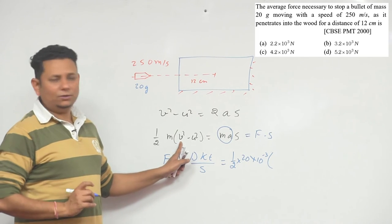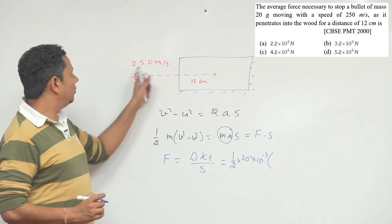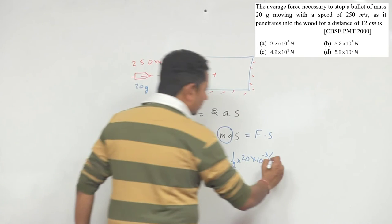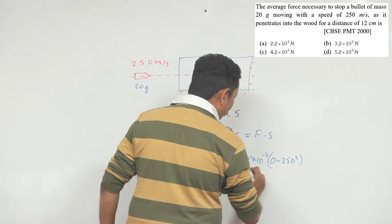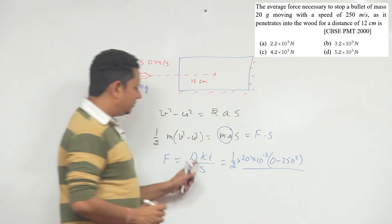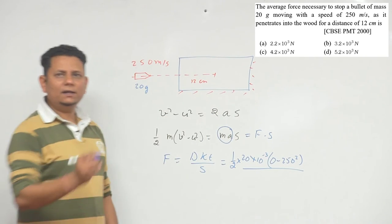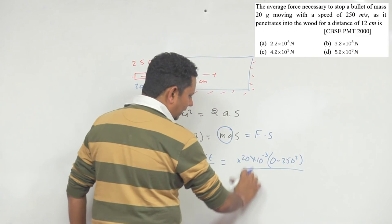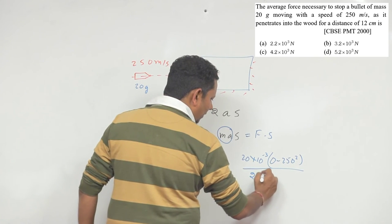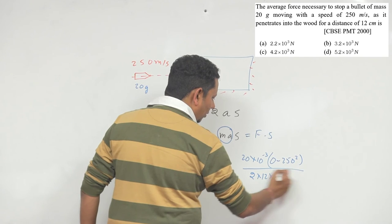Itna gram divided by change in velocity. Final velocity aapki zero hai, initial velocity jo hai, wo 250 meter per second hai. So this will be zero minus 250 ka square divided by jo aapka yeh displacement hua hai, that is 12 cm. So isko hum 12 likhenge. This will be, is 2 ko niche leyate hai, so this will be 2 into 12 multiplied by 10 to the power minus 2.